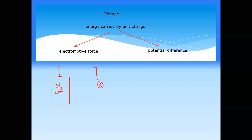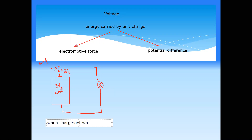If the cell is labeled 3V — three volts — it means every charge will get three joules of energy. The charge has energy because of the chemical reaction inside the cell. When the charge gets energy due to a chemical reaction, that energy carried by the charge is known as EMF — electromotive force. It is not actually a force; it is energy carried by the charge.